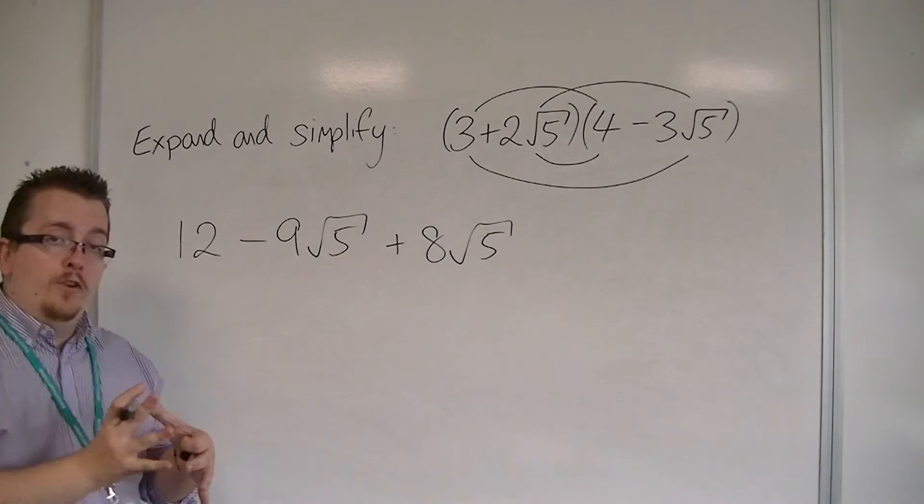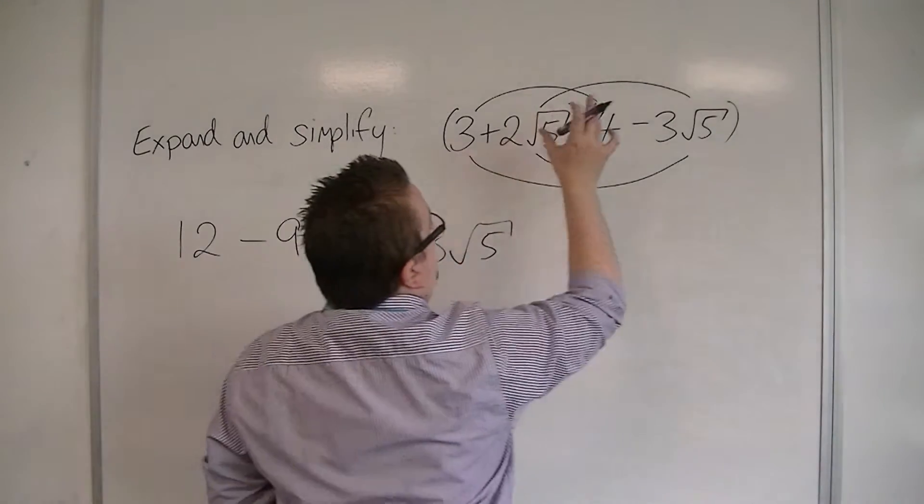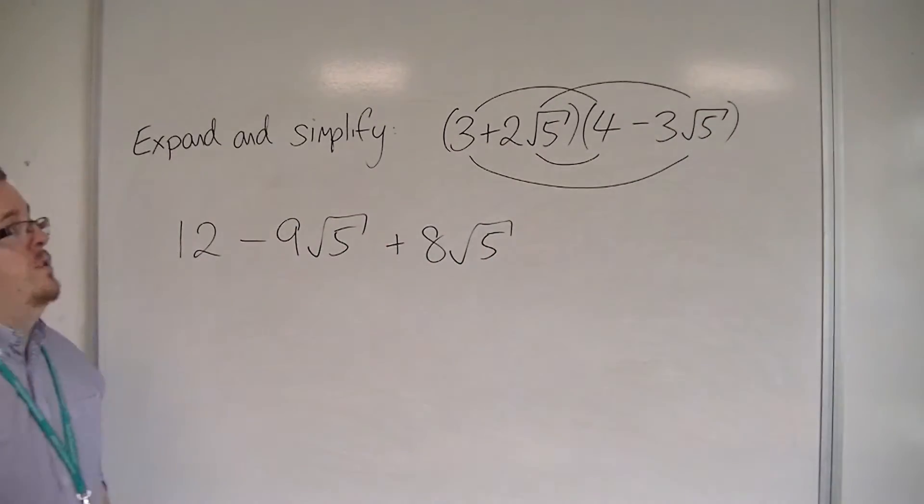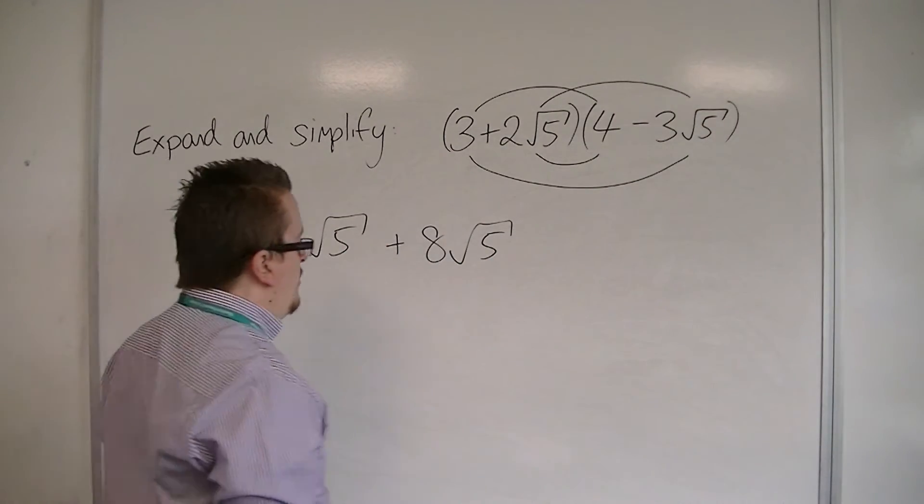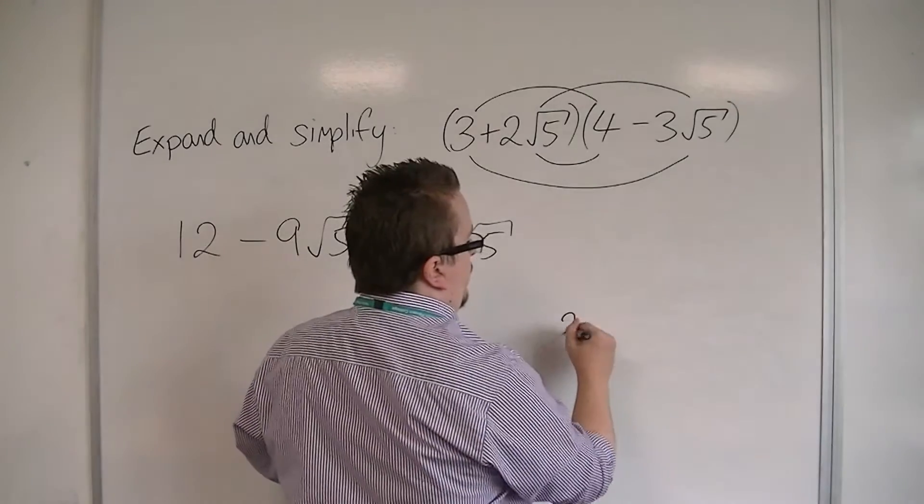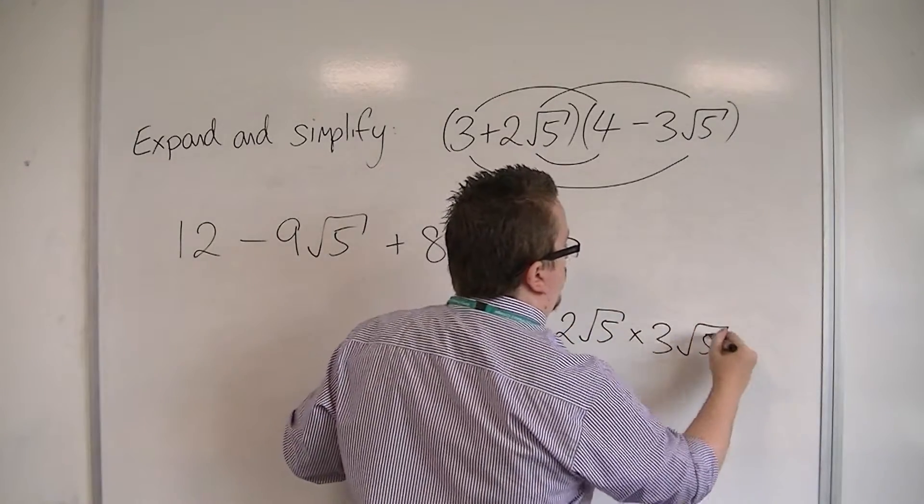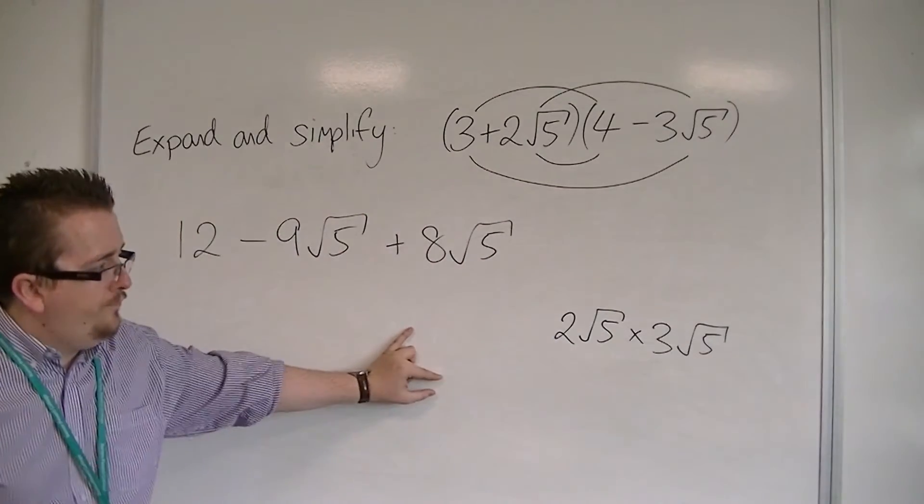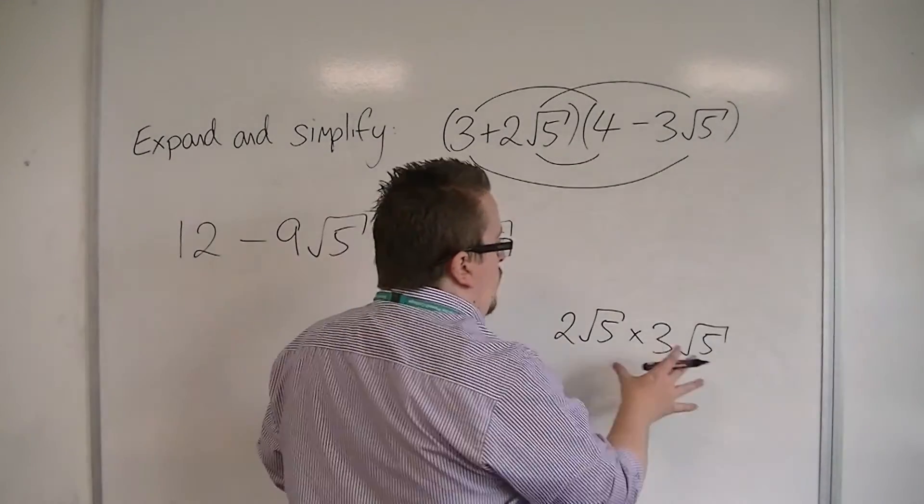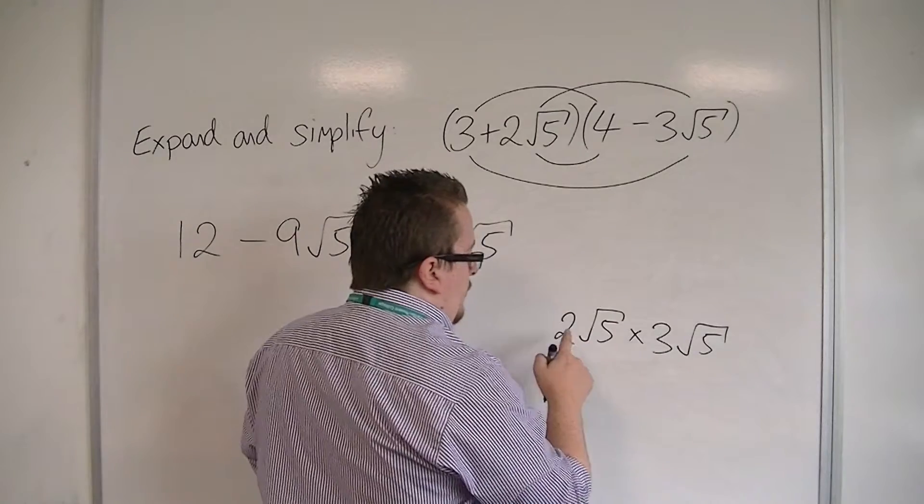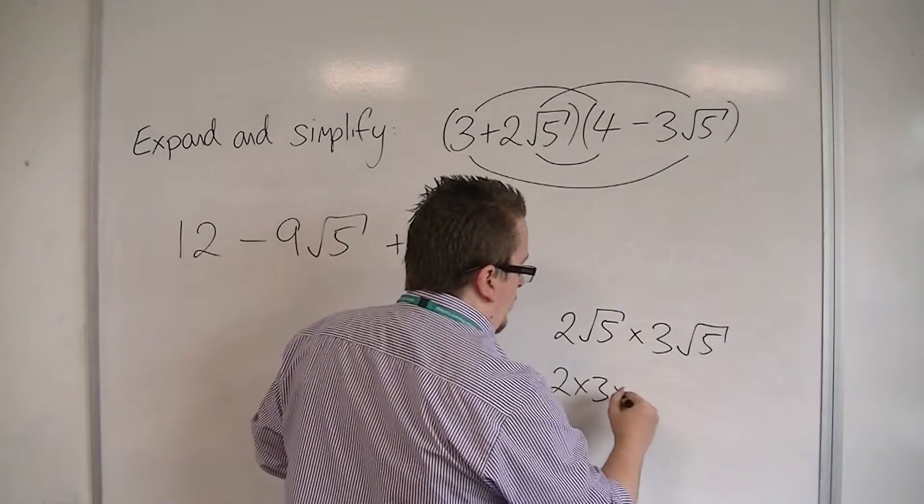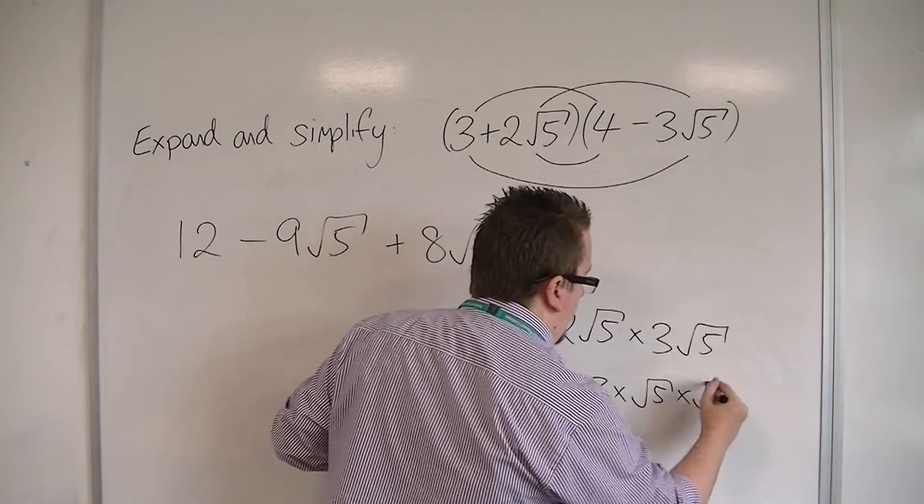The more difficult part is the 2 root 5 times the minus 3 root 5. Let's just do that over here. We've got 2 root 5 times by 3 root 5. I'll ignore the negative sign for the moment. If you reorder that, you've got 2 times 3 times root 5 times root 5.